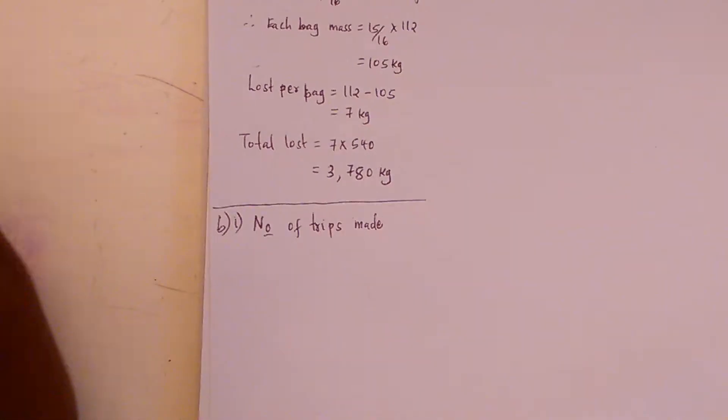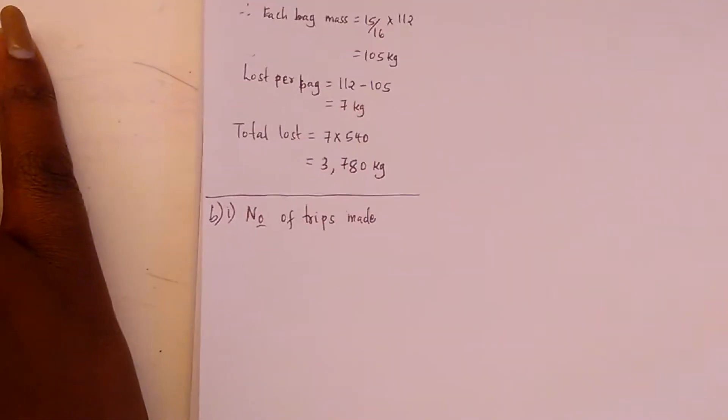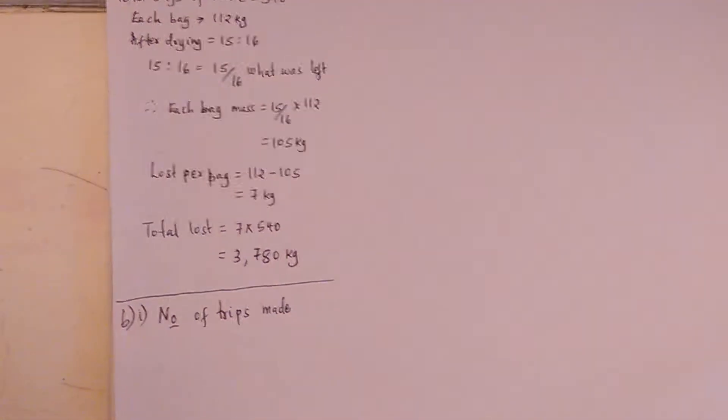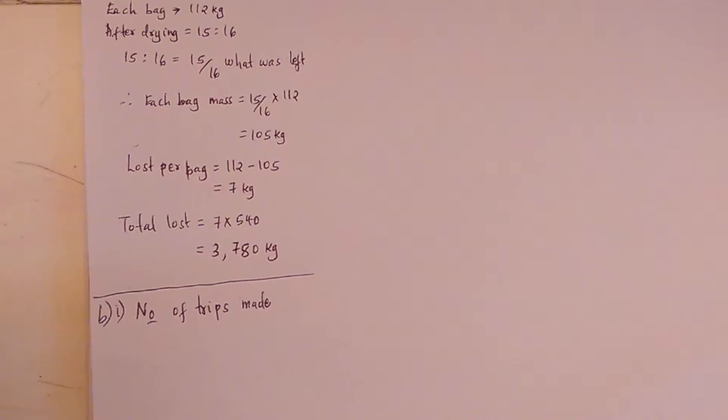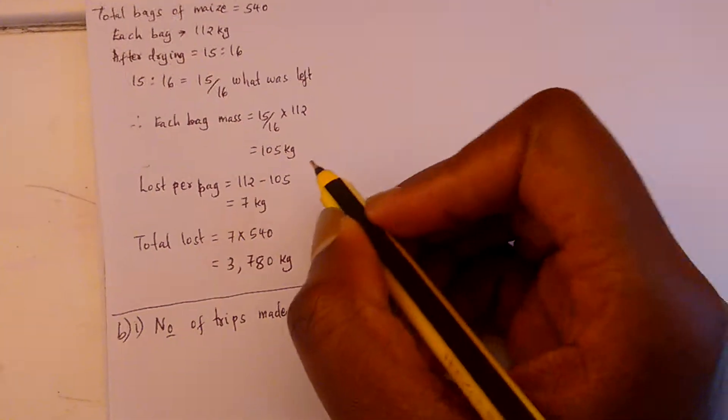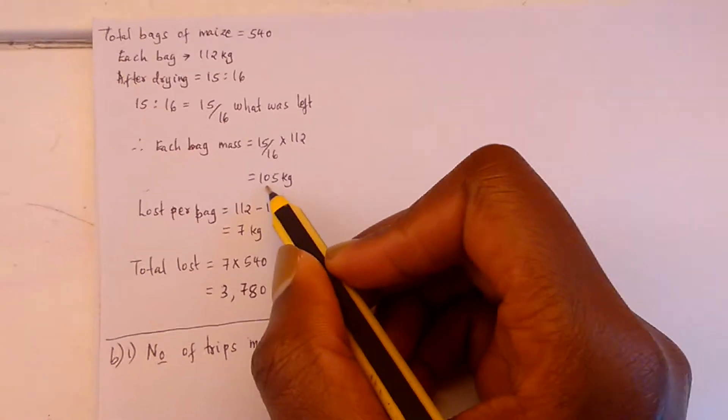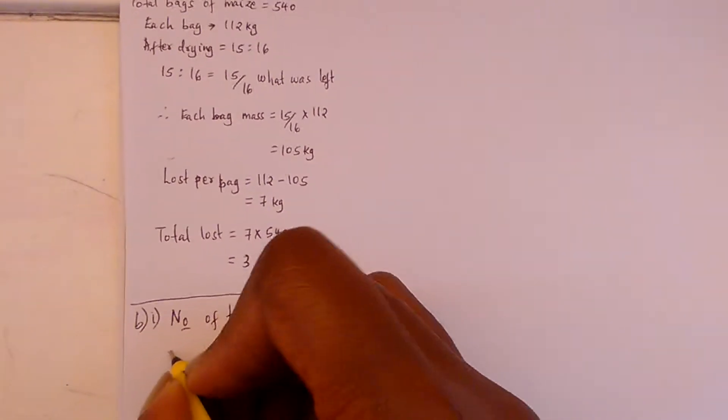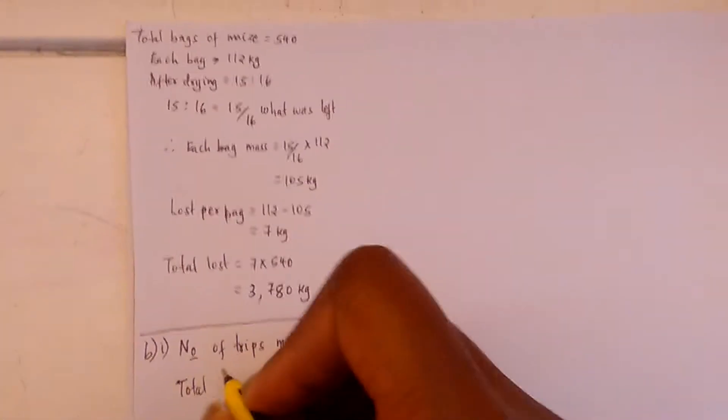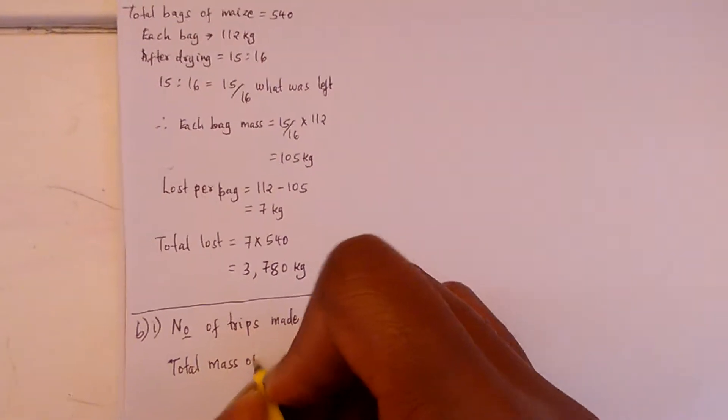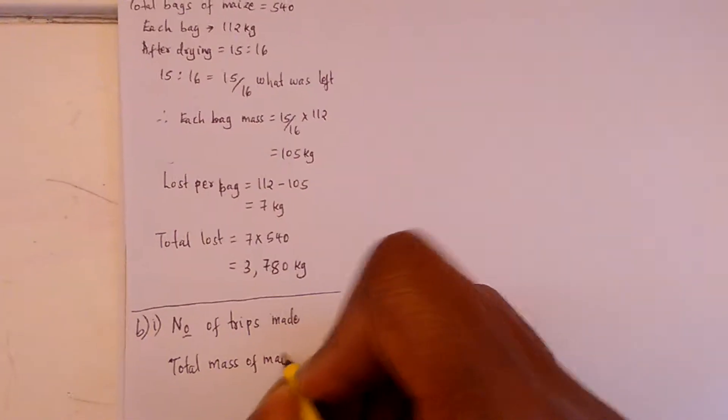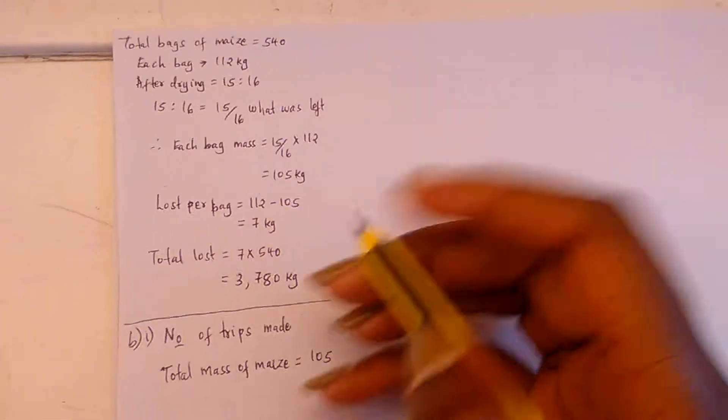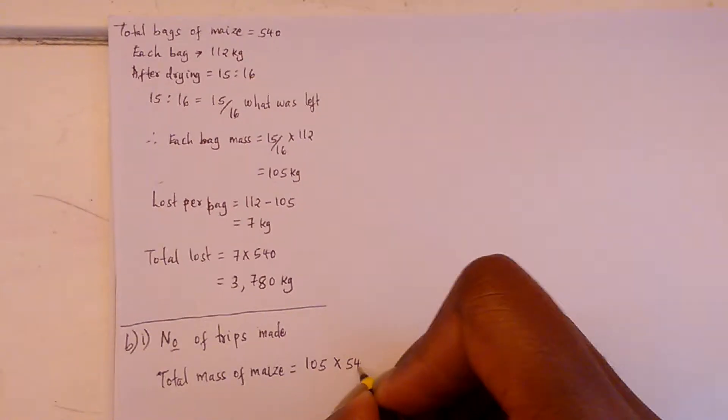We know that the total mass lost was 3,780 kilograms. First, we need to compute what was not lost. Each bag after drying was 105 kg, so the total mass of maize was 105 kg × 540 bags.